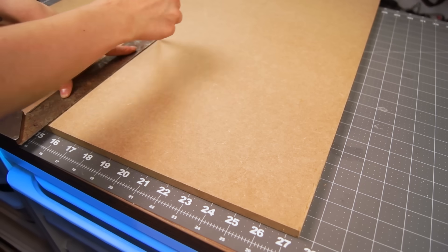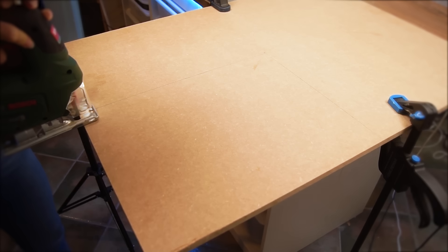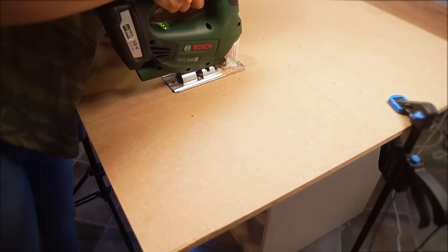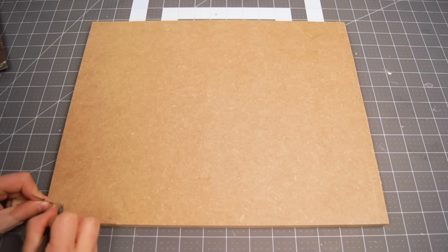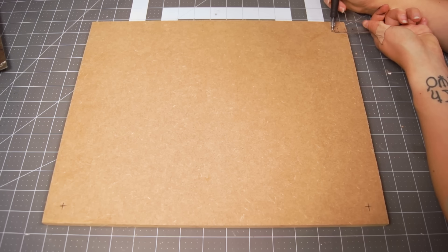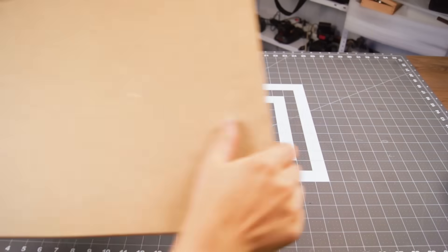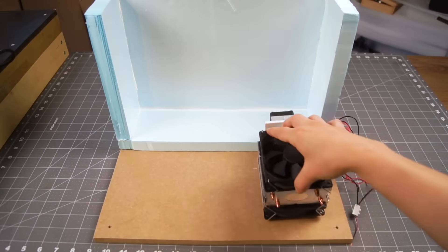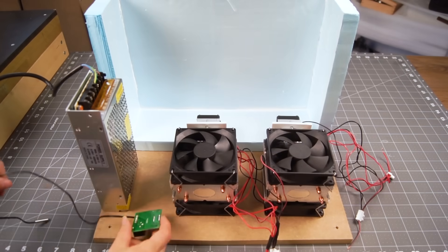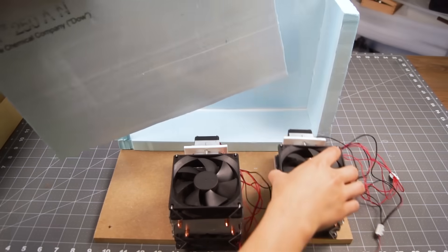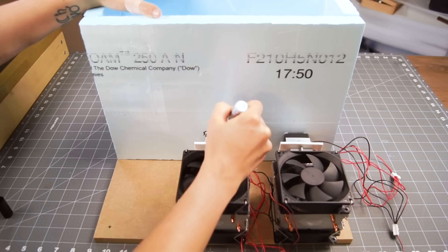I also had time to make a bottom piece out of MDF. I began cutting a square that would fit my measurements and then I had to cut and drill some holes in it. Firstly I drilled four holes in each corner for each of the legs. Secondly I had to find out where to cut the holes for the fans, so first I had to cut some holes in the styrofoam where they would enter the main compartment.